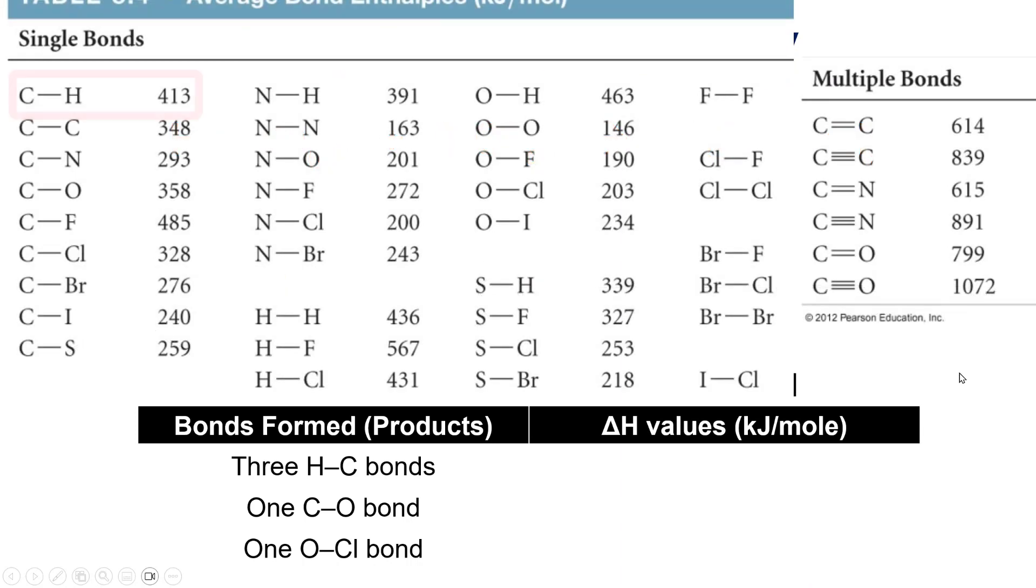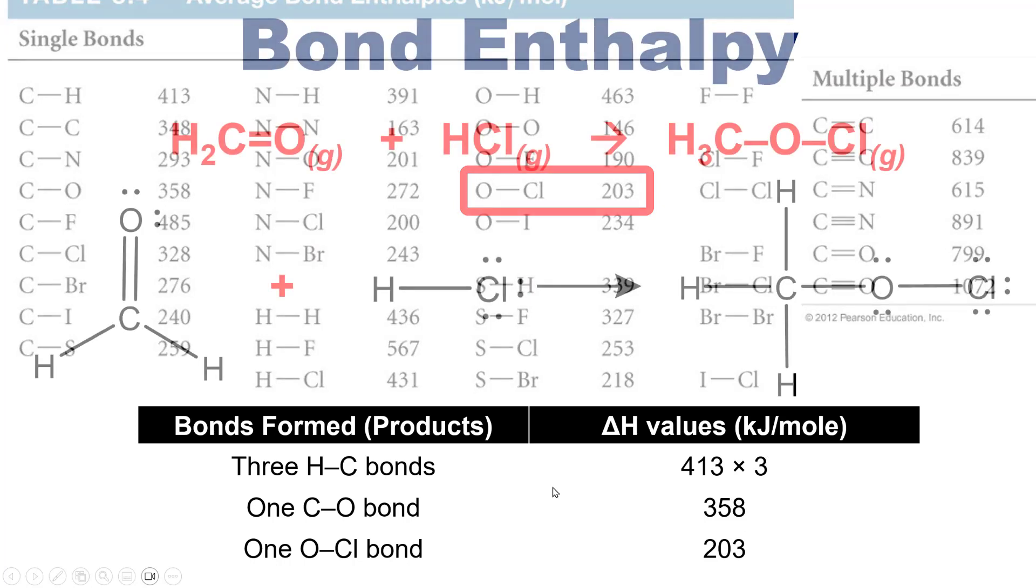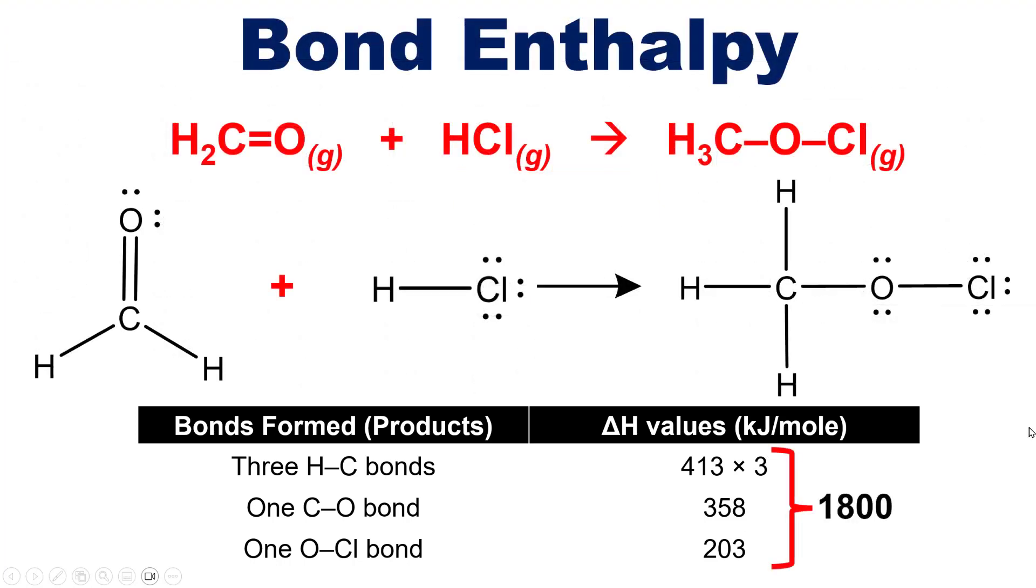Well again, as you see on this table, each carbon hydrogen single bond is worth 413 kJ per mole. Because this product has three of those bonds, mathematically I have to take that number and multiply it by three. Separately on this table, you can see that each carbon oxygen single bond is worth 358 kJ per mole. So I'll add it here to my growing pile of numbers and each oxygen chlorine single bond is worth 203 kJ per mole. If I add all of this stuff together, I get to a final total of 1800 kJ per mole of this product formed.